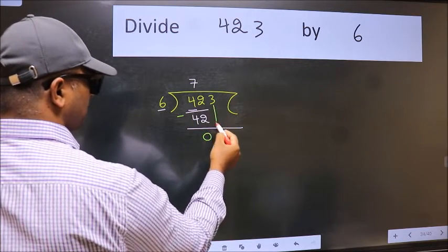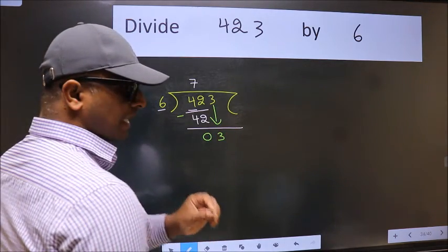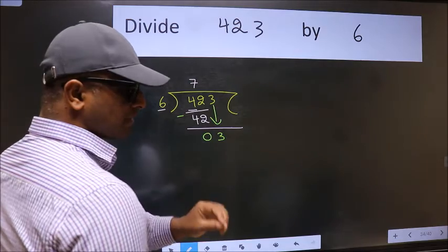After this, bring down the beside number. So 3 down. After this step, the mistake happens. And the mistake is this.